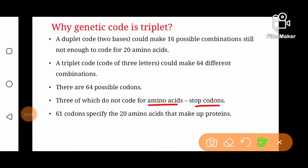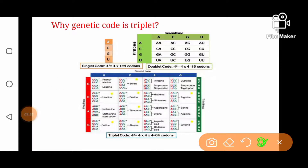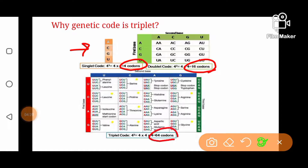Three out of 64 codons do not code for amino acids and they are known as stop codons or termination codons. The remaining 61 codons specify all 20 amino acids to make up proteins. In these tables you can see how a singlet code will make only four combinations or four codons, a duplet code will make 16 possible combinations, while a triplet code will make 64 possible combinations.